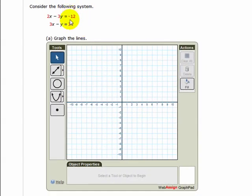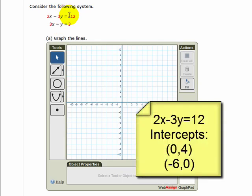Here, we need to graph a system of equations. In this system of equations, I've already calculated some intercepts for both of these equations. So I'm going to graph this first line using its intercepts, which are (0, 4) and (-6, 0).